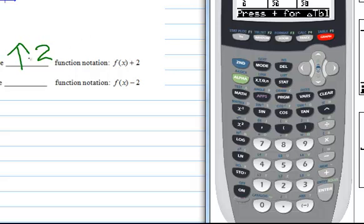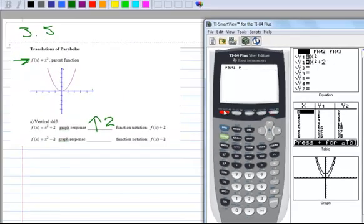Okay, so that's how you do the first one. Then the second one, you're going to come back to y equals. You're going to always leave your parent function there, so arrow down, clear this one.